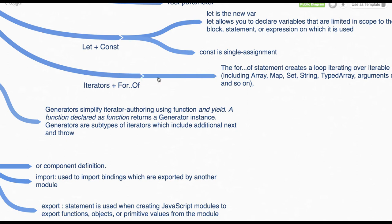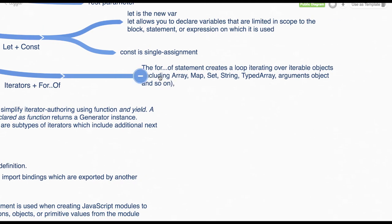Then we talked about the for...of loop. For...of loop is a concept of generators which are giving us the iterable objects, and for...of loop can be run on any iterable objects including array, maps, set, string, typed array, anything.